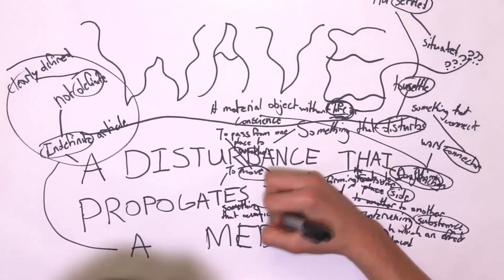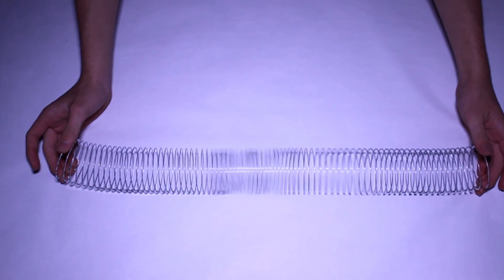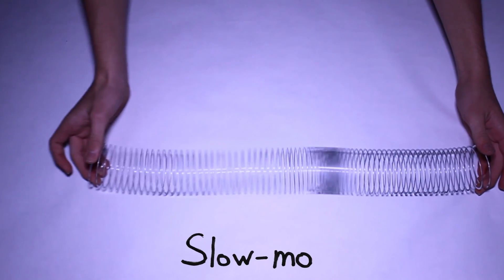Sound is a wave, which is a disturbance that propagates through a medium. A slinky can provide a good demonstration. A push on one coil creates a push on the next and the next until it reaches the end of the slinky.